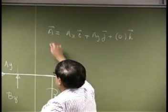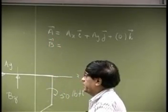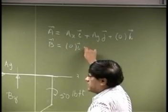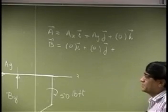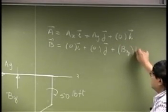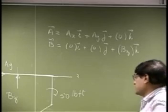Then you have another force which is B. That's at point B. The X component is 0, that's 0 times i. Then the Y component is 0, so you got 0 times j. Then you have BZ and then you have k. So that's the force B. But that's not all.